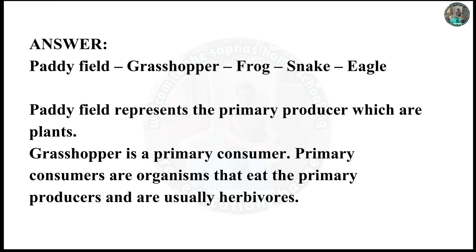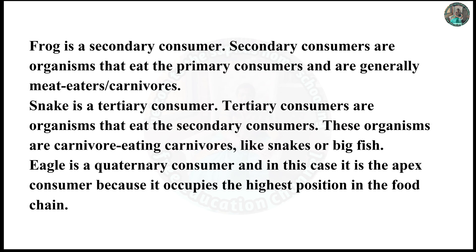Paddy field represents the primary producer, which are plants. Grasshopper is the primary consumer. Consumers are organisms that eat the primary producers and are usually herbivores. Frog is the secondary consumer. Secondary consumers are organisms that eat the primary consumers and are generally meat eaters or carnivores. Snake is a tertiary consumer. Tertiary consumers are organisms that eat the secondary consumers; these organisms are carnivores eating carnivores.